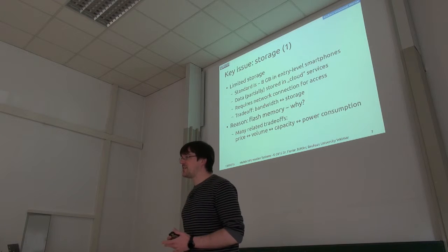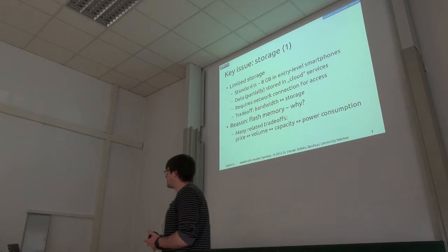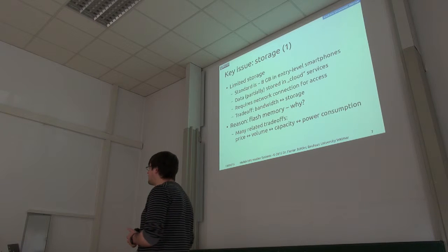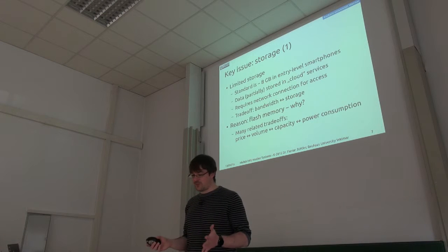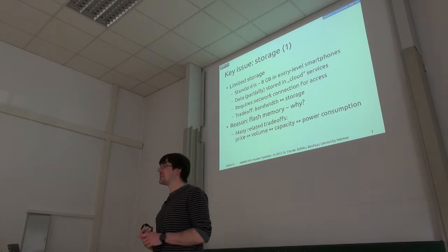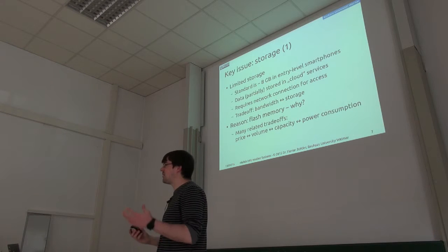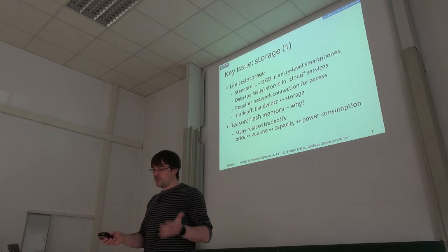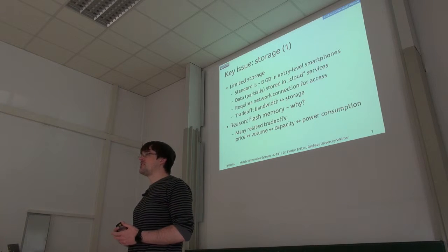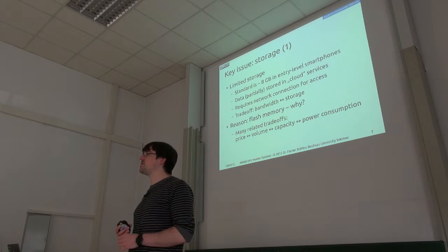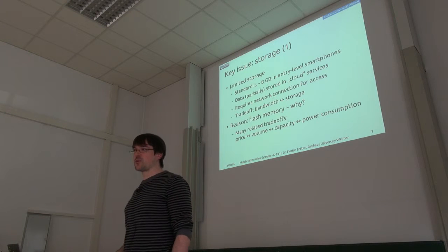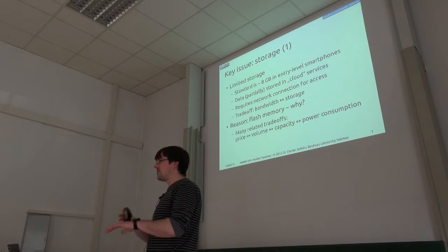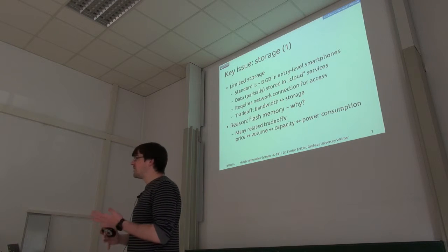Another capacity issue that's kind of connected is storage. The standard is something around 8 gigabytes on a cheap device like the Motorola I mentioned. You can't have all your data on the phone, so if you have lots of pictures the usual way is to transfer them to a cloud service. And again, we get a trade-off: we either need to use bandwidth to access our cloud service, or we need more local storage. More bandwidth usage also means more energy usage, so these trade-offs interlock.